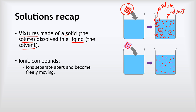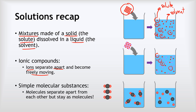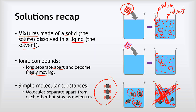It varies for different types of compounds. With ionic compounds, all of the ions separate apart and become freely moving — you can see the pink and red positive and negative ions floating around individually in that solution. Whereas with simple molecular substances, for example carbon dioxide, when they dissolve the molecules stay as whole molecules but just spread out through the water. The molecules do not break up into individual atoms — that is not what happens.